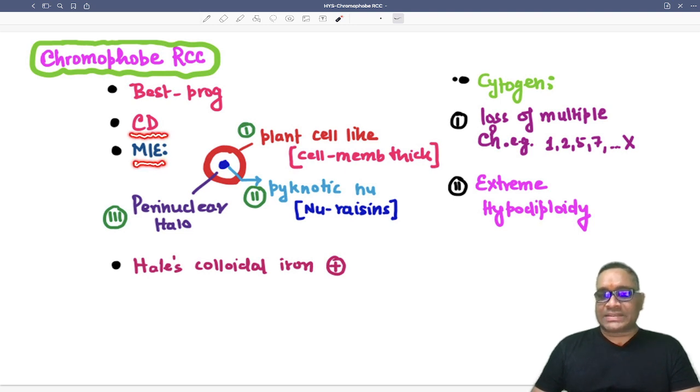On microscopic examination, they will have three characteristic findings. What are these three characteristic findings? Plant cell-like tumor cells. Why plant cell-like tumor cells? Because their cell membrane will be thick.